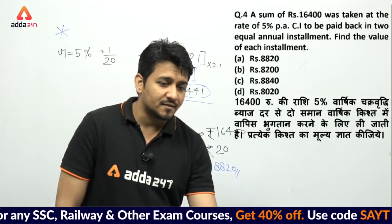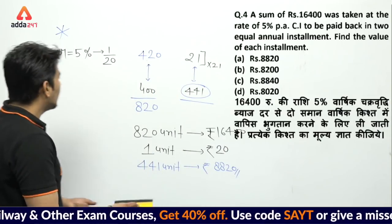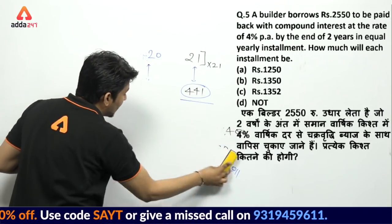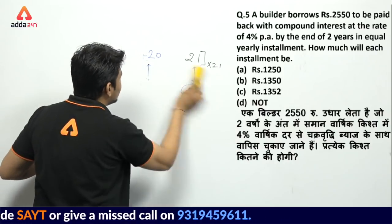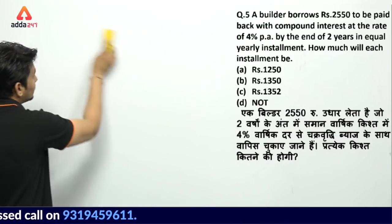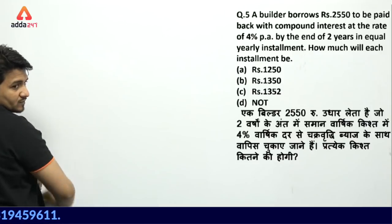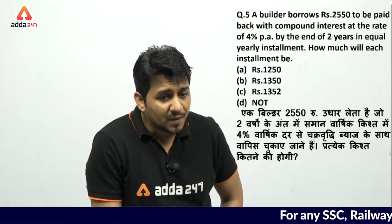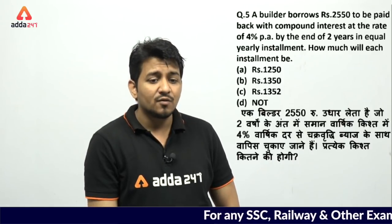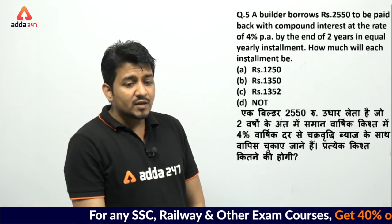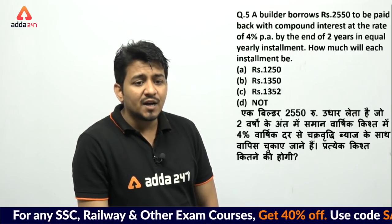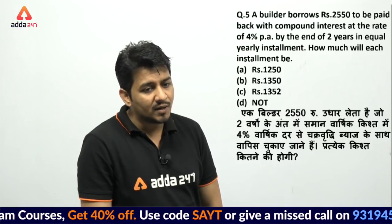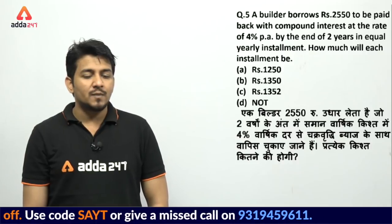Let's move on. Computer ji, next question. A builder borrows Rs. 2550 to be paid back with compound interest at the rate of 4% per annum by the end of 2 years in equal yearly installments. How much will each installment be?